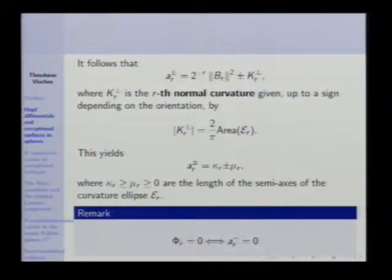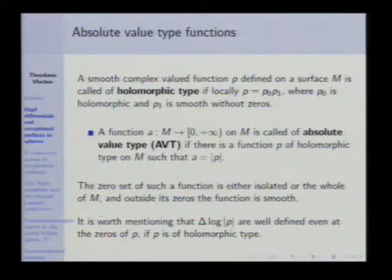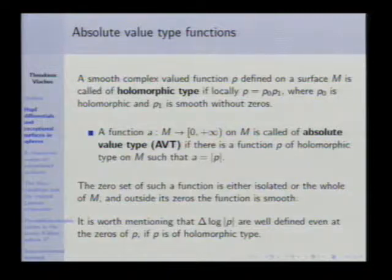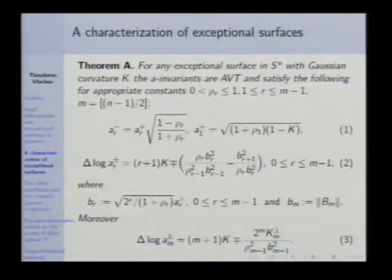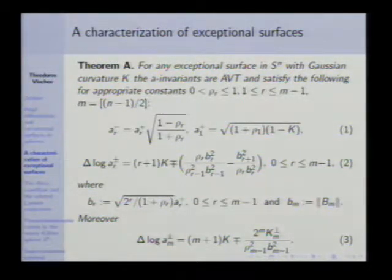What is the geometric meaning of those functions? It turns out that these invariants are given by a specific formula: K_r and M_r are just the lengths of the semi-axes of the corresponding curvature ellipse. An important remark: phi_r vanishes precisely at points where A_r^− is zero. In order to state the characterization, we need the notion of absolute-value-type functions, introduced by Elsenberg and Tribuzy. These are functions defined on surfaces that, like holomorphic functions, either vanish on the whole surface or only at isolated points.